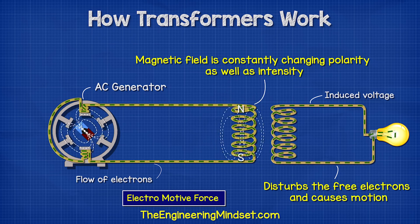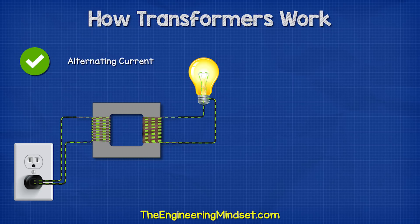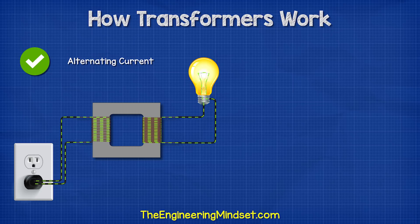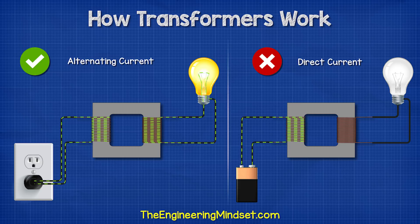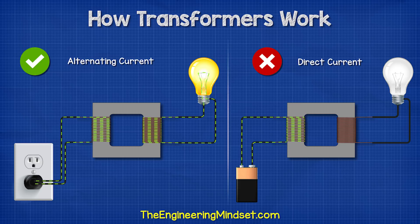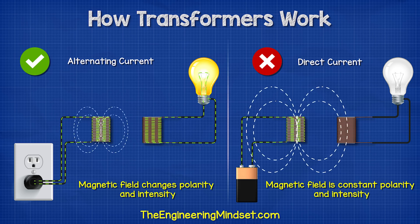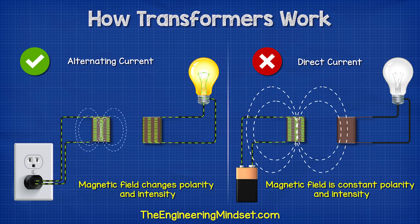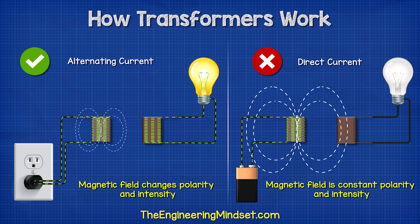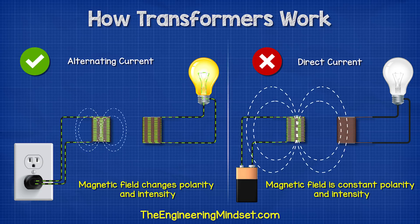However, this only works with alternating current. It will not work if we connect a direct current supply to the transformer. The flow of electrons will still create a magnetic field around the primary coil, but this will be constant, with a fixed polarity and intensity.